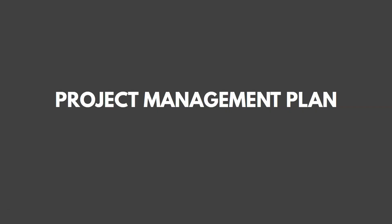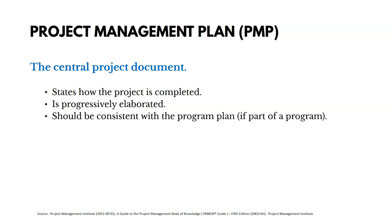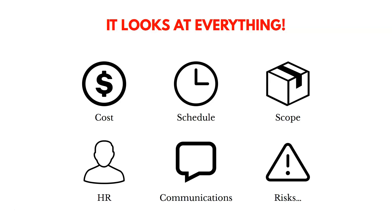After we've developed the project charter, in planning we're going to work on the project management plan — it's really the central project document. It shows how the project is going to get completed, and it's progressively elaborated, meaning we add detail to the plan over time because we won't know everything at the start of the project. It should be consistent with a program plan or portfolio plan if that exists — we want to make sure we align upwards. The project management plan looks at everything: cost, schedule, scope, human resources, communications, risks.